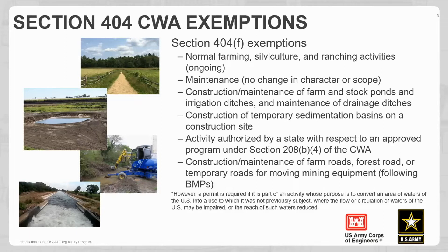It is possible to alter the flow, say with a diversion structure. Theoretically, you shouldn't be reducing the reach of those waters, so the recapture provision wouldn't have been triggered yet. The recapture provision is one way that you can get booted out of an exemption — if you're altering the flow and circulation of waters of the U.S. as well as reducing the reach of those waters.